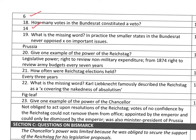Number nineteen: what is the missing word? In practice, the smallest states in the Bundesrat never opposed Prussia on important issues. Question twenty: give one example of the power of the Reichstag. There were actually three specific things. The first was legislative power — the power to make law, the power to approve laws. Secondly, the right to review non-military expenditure. And from 1874, they had the right to review army budgets every seven years.